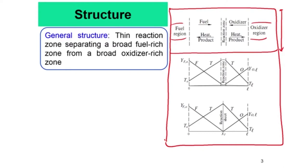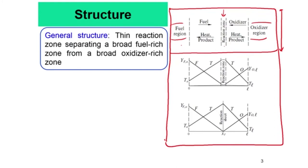The fuel will diffuse from the fuel region towards the oxidizer region, and the oxidizer will diffuse towards the fuel region — but only by diffusion, not by bulk motion. If you have a flame inside, the situation changes: fuel will be consumed at the flame region, oxidizer will also be consumed in the flame region, and in return the reaction zone will give heat out on both sides by conduction/diffusion. Products will also diffuse on both sides.